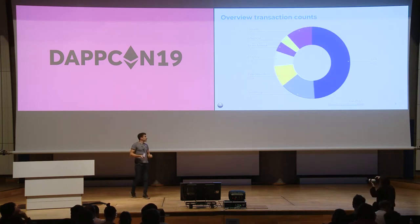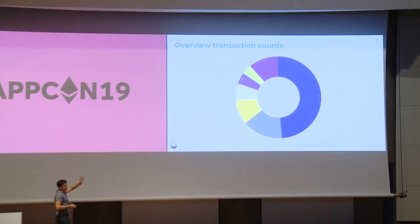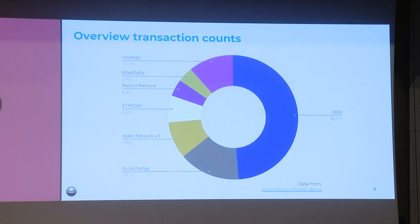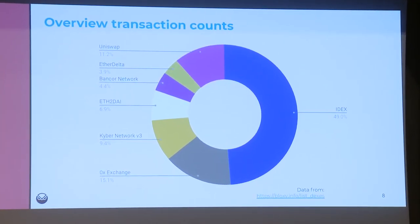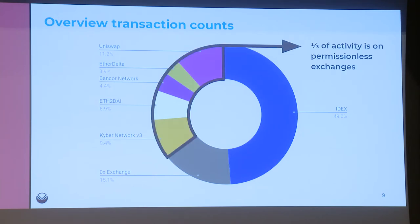Let's look at some statistics on market shares. I've plotted the transaction count over the last 30 days as an average. IDEX is the market leader, pretty dominant with basically 50%. Then we have 0x with lots of activity, and also Kyber, EtherDelta, Bancor, Delta, and Uniswap. What do the latter all have in common? They are permissionless exchanges. We can see that permissionless exchanges are really having a significant share — roughly one-third.